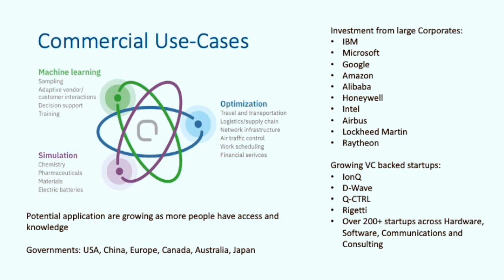So here we show some of the areas where quantum computing is being actively researched and applied in machine learning, optimization and in simulation. However, the application is much broader than these three categories, and we are seeing the potential applications grow as more people have access to small scale quantum computers to start exploring potential algorithms across a broad range of problems. Investments from government has been significant and is still growing, with leading countries being USA, China, Europe, Canada, Australia and Japan.